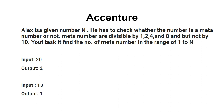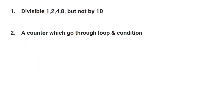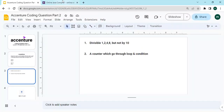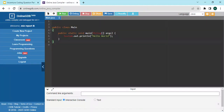We have to find the total count of meta numbers in the range 1 to N. There are test cases with given input and output that we need to satisfy. We need to keep in mind that numbers should be divisible by 1, 2, 4, and 8 but not by 10. We will use a counter variable with a loop and condition check, then increment it.